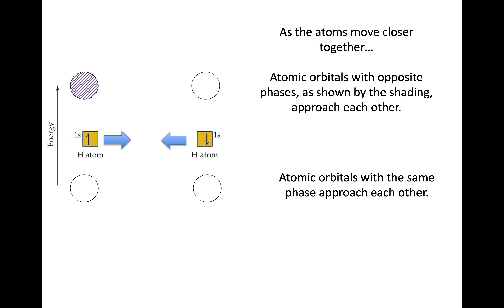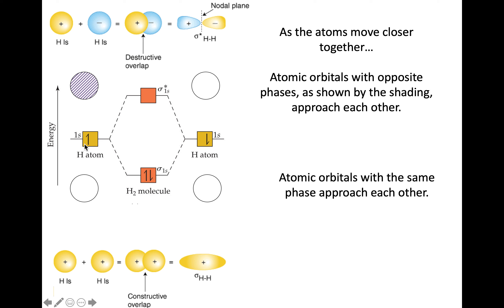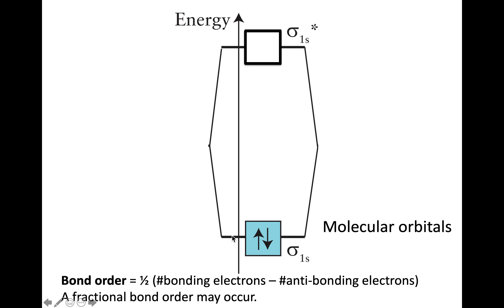For H2 I have a total of two electrons, and they both go into the bonding molecular orbital. The bond order is calculated as bonding electrons minus anti-bonding electrons, divided by two. This is a long way to confirm what we already know: H2 has a bond order of one — a single bond. Once we've constructed our molecular orbitals, we're no longer thinking about atomic orbitals; we're thinking about orbitals belonging to the molecule itself.